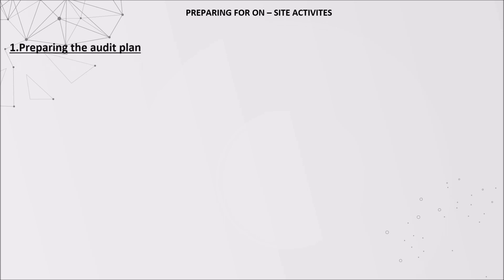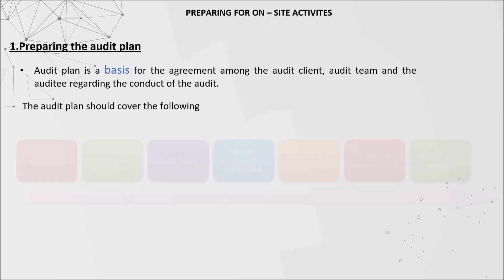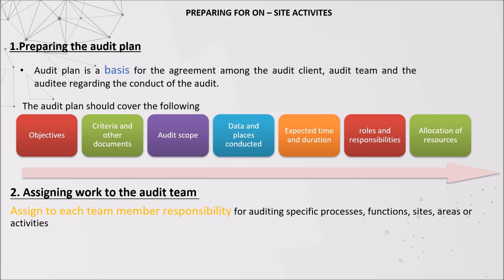For the final step of planning, it is to prepare the audit plan. The audit plan is the basis for the agreement among the audit client, audit team, and the auditee regarding the conduct of the audit. A comprehensive audit plan should cover the objectives, criteria and other documents, audit scope, dates and places conducted, expected time and duration, roles and responsibilities, and allocation of resources. After that, assigning to each team member responsibility for auditing specific processes, functions, sites, areas, or activities is another important step.